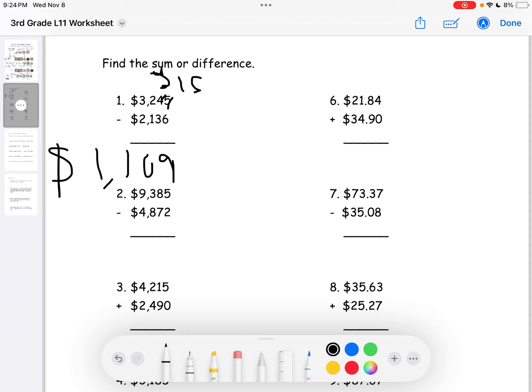We'll do number 2 here. 5 minus 2 is 3. 8 minus 7 is 1. Since we can't do 3 minus 8, we gotta change this 9 to an 8. Change the 3 to a 13. 13 minus 8 is 5. And the 8 minus 4 will be 4. So, the answer to question 2 will be $4,513.